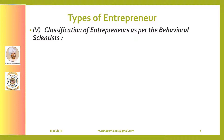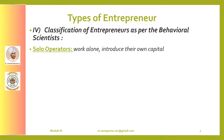The next group of entrepreneurs are classified based on behavioral scientists. Here we have solo operators, active partners, inventors, challengers, buyers, and lifetimers. Solo operators usually work alone and if needed at all employ a few employees to assist. Most entrepreneurs begin their entrepreneurial career in this particular fashion.